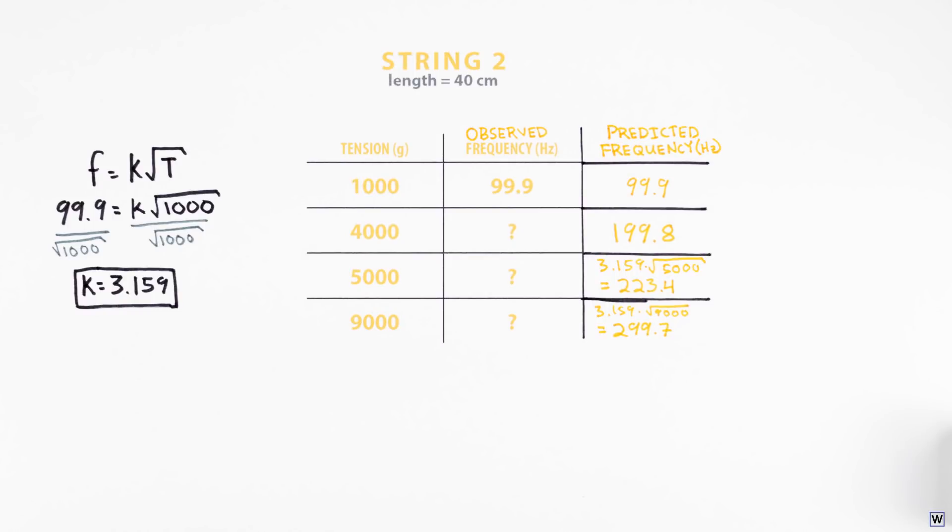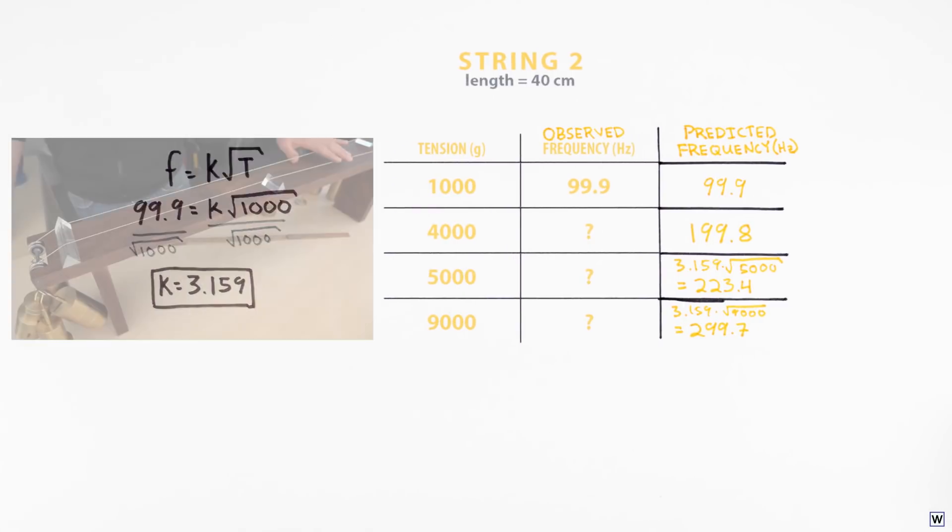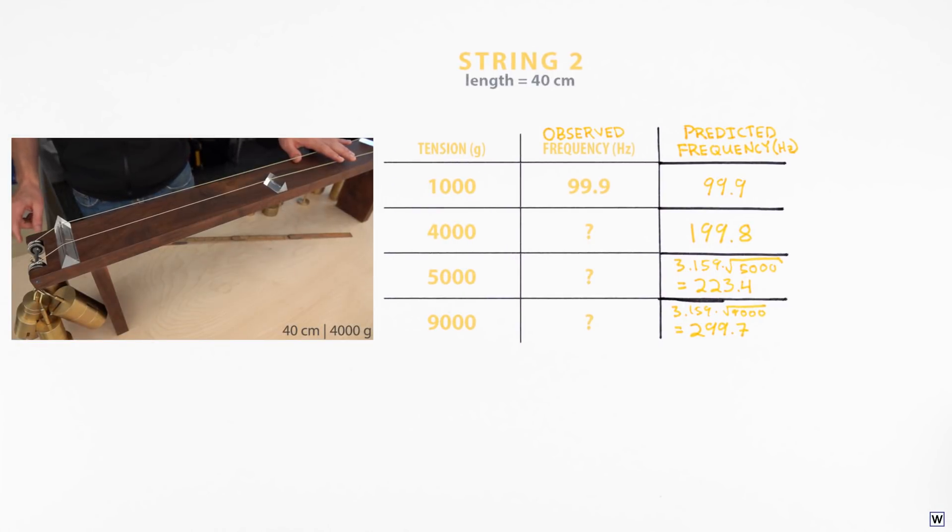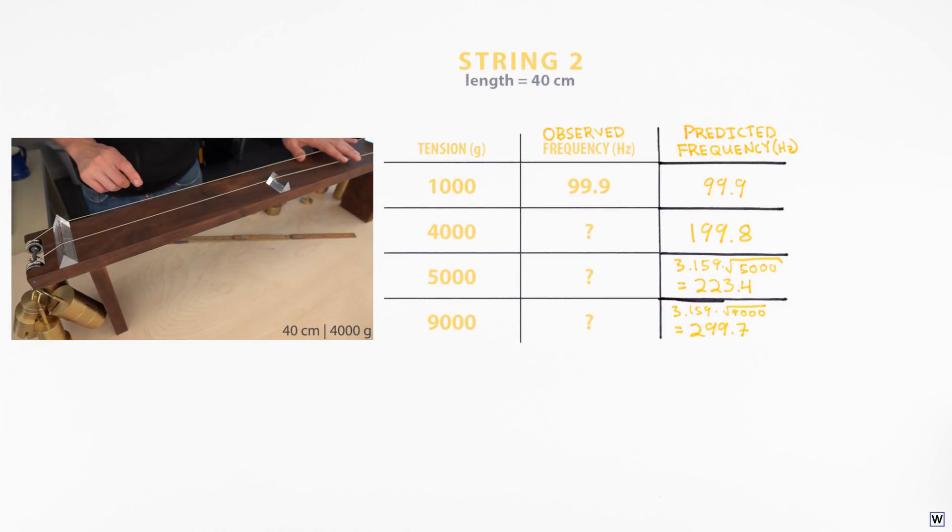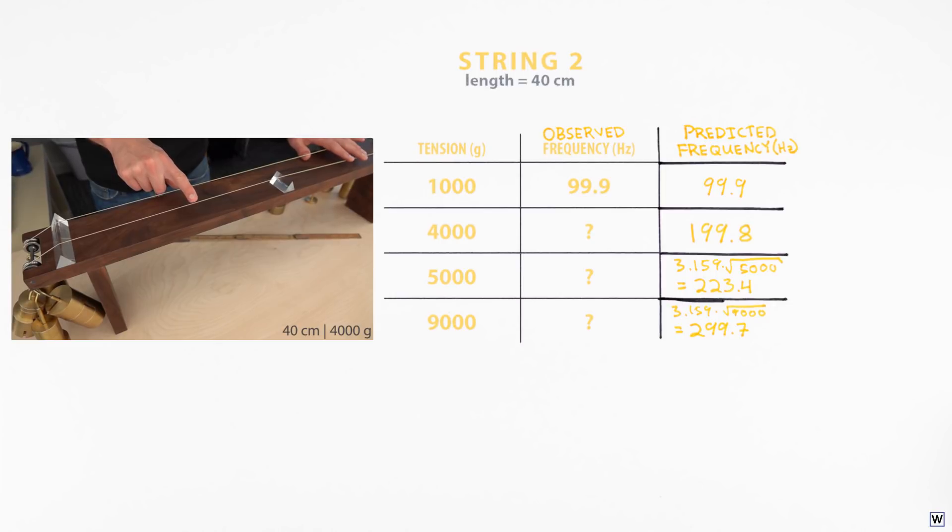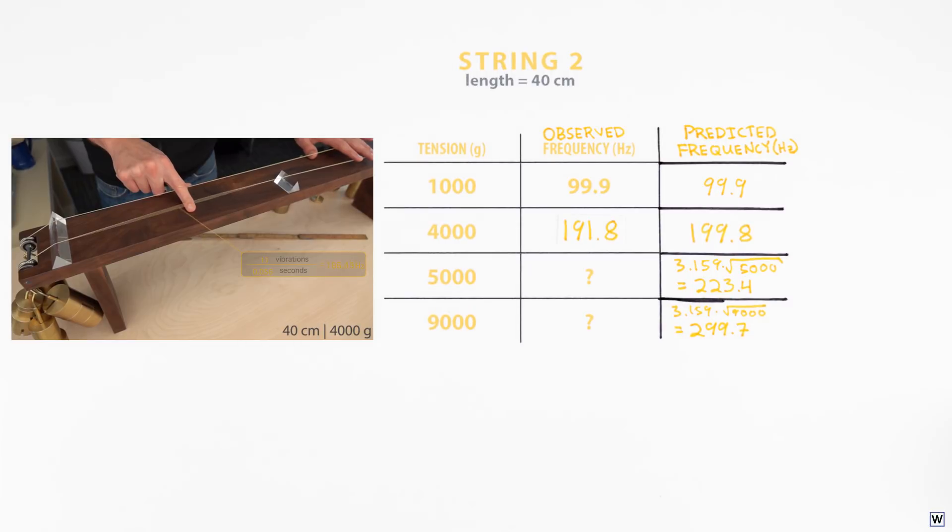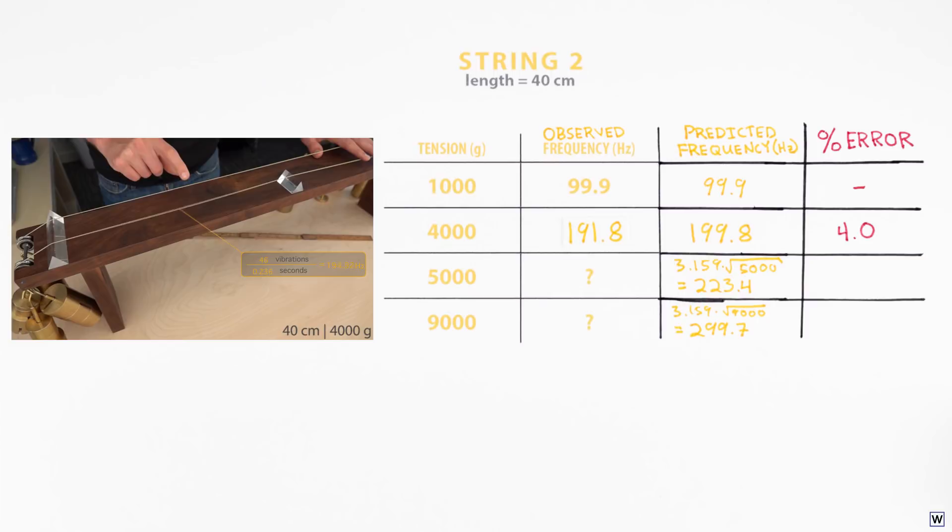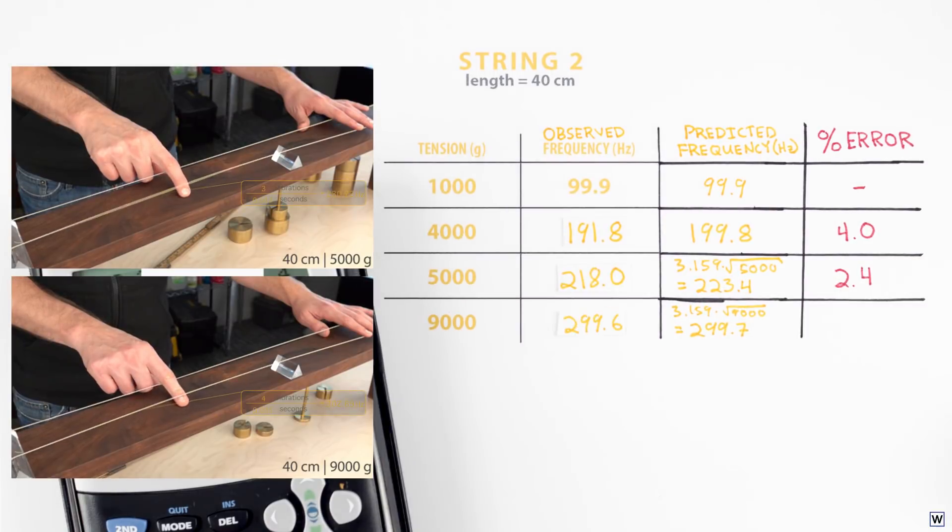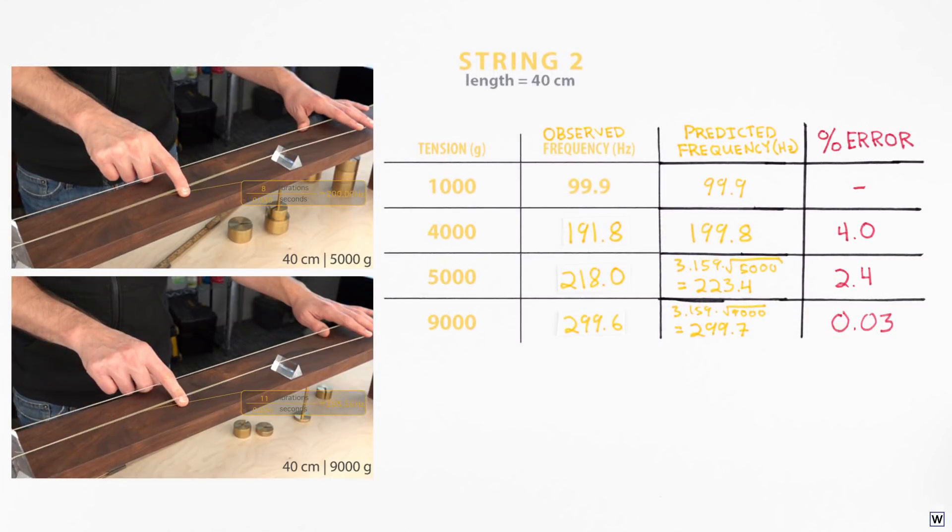Now that we have a set of specific predictions that we computed using our hypothesis that frequency is proportional to the square root of tension, we're ready to test. In the 40 centimeter case, for a tension of 4,000 grams, our hypothesis predicts a frequency of 199.8 hertz. And if we set our string to this tension and carefully measure our frequency, we observe approximately 191.8 vibrations per second. Pretty close to our predicted frequency. And as we continue testing, we see good agreement between our observations and predictions.